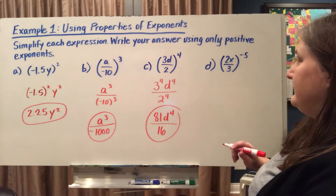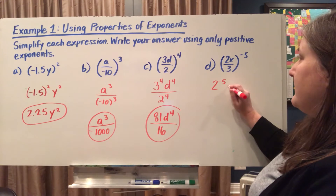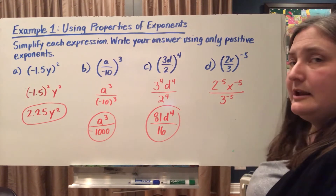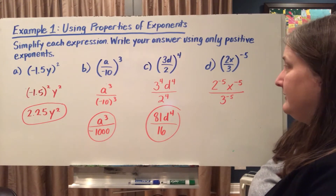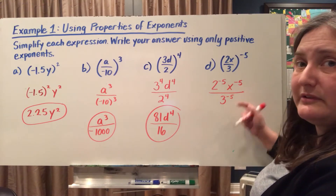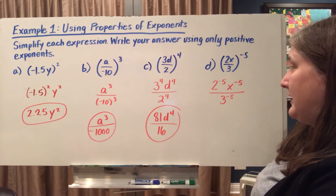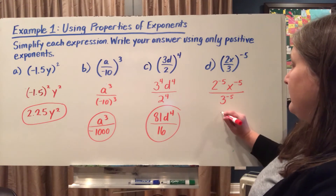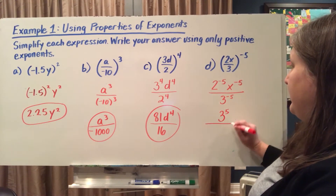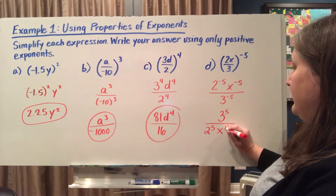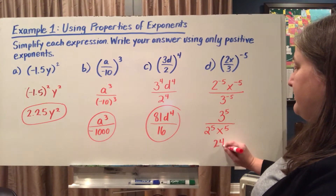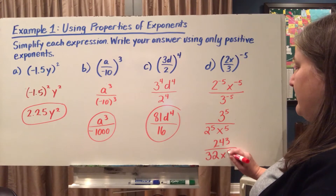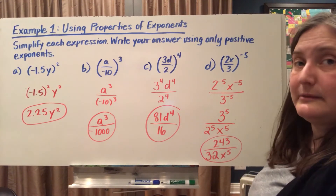In this case, my exponent is negative 5, so I have 2 to the negative 5th power, x to the negative 5th power, and in my denominator, 3 to the negative 5th power. Since I'm only allowed to use positive exponents, I have to find the reciprocal of each of these individual factors — they're going to flip from numerator to denominator or denominator to numerator. So I'm just going to flip my entire numerator and denominator. 3 to the 5th power gives me 243, 2 to the 5th power gives me 32, and x to the 5th power can't be simplified. So 243 over 32x⁵ is my simplified answer.